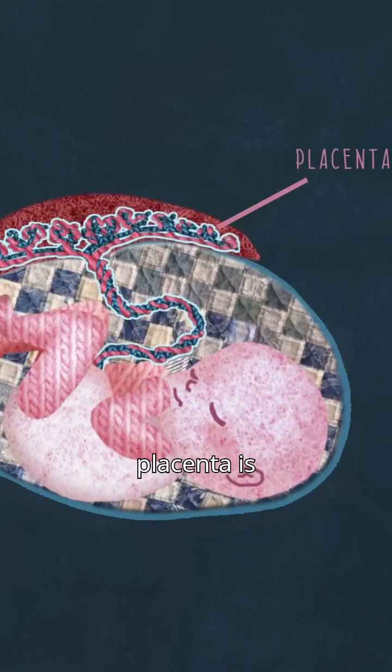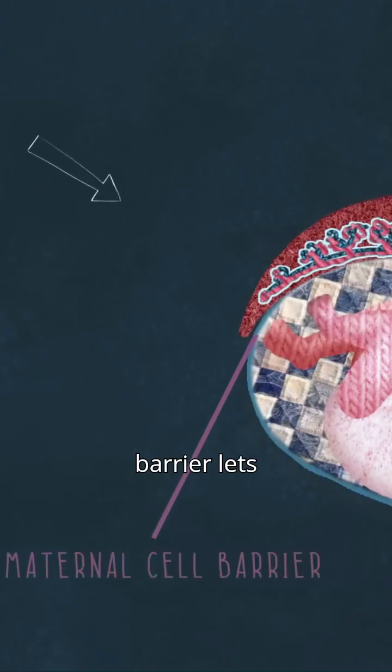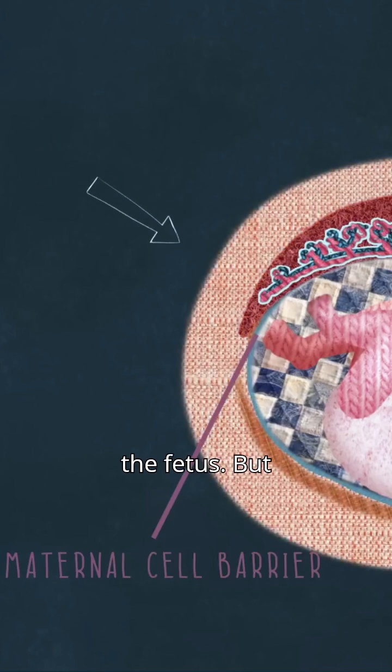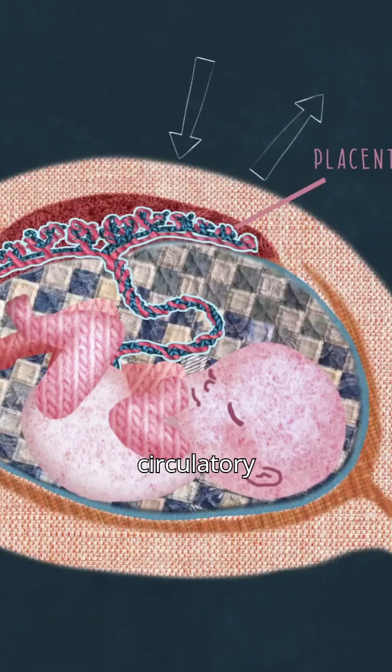In most mammals, the placenta is confined behind a barrier of maternal cells. This barrier lets the mother control the supply of nutrients to the fetus. But in humans and a few other species, the placenta actually penetrates right into the mother's circulatory system to directly access her bloodstream.